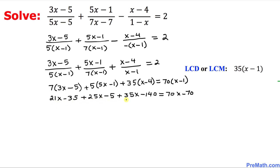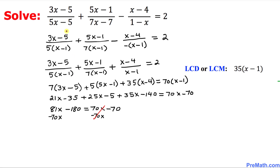Now we combine like terms. Combining the x variables gives us 81x, and combining the constants gives us negative 180, so we have 81x minus 180 equals 70x minus 70. Let's subtract 70x from both sides, so we end up with 11x minus 180 equals negative 70.